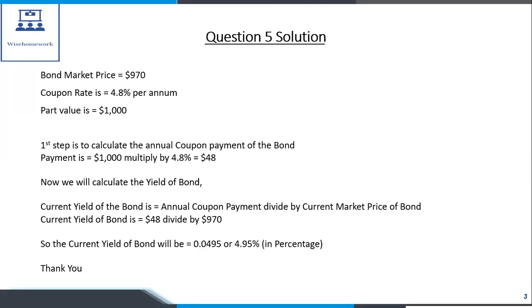The first step is to calculate the annual coupon payment of the bond. Payment equals $1,000 multiplied by 4.8%, which equals $48.